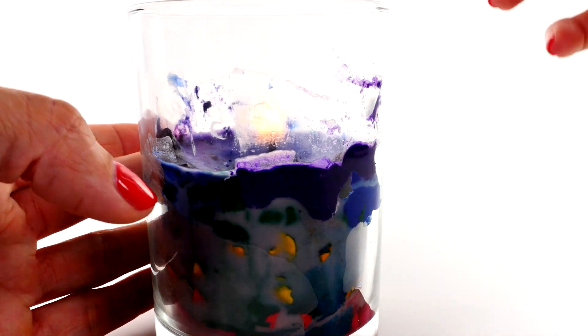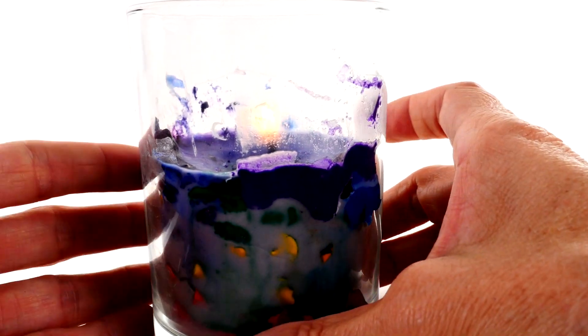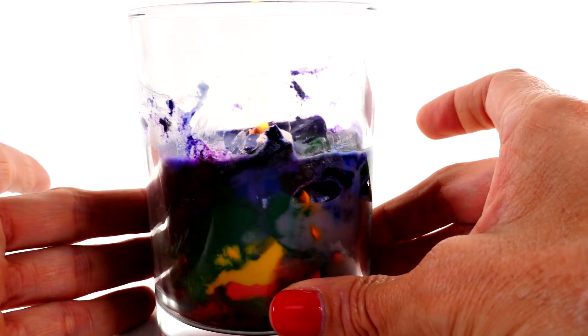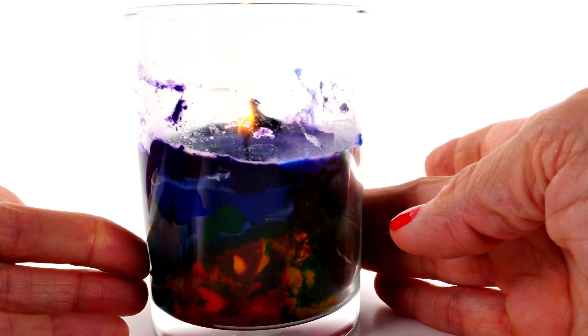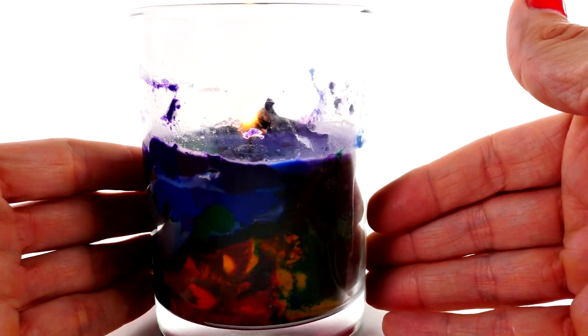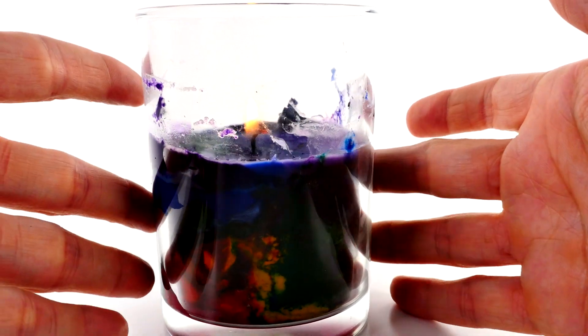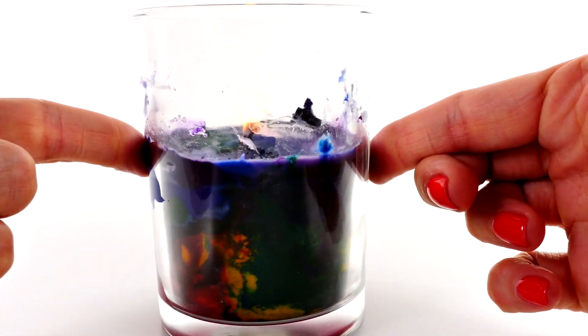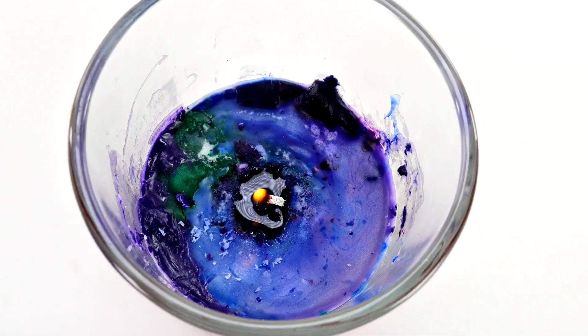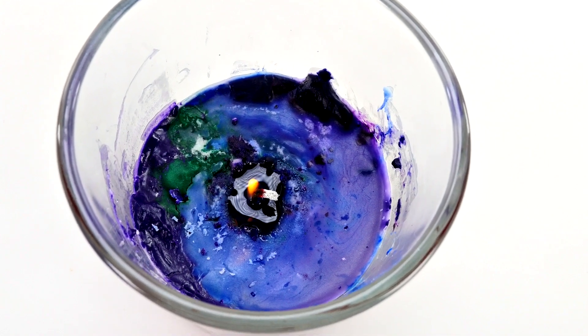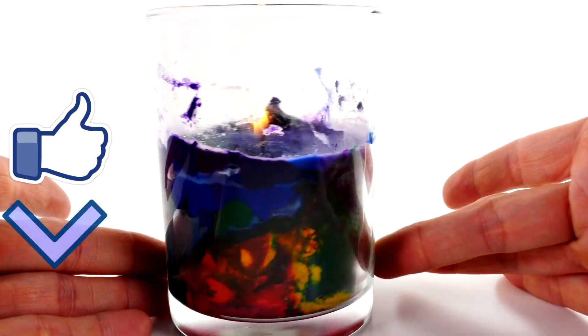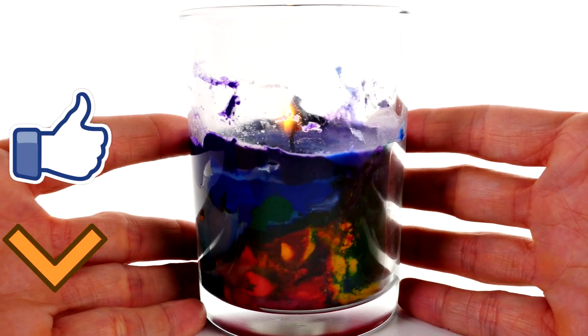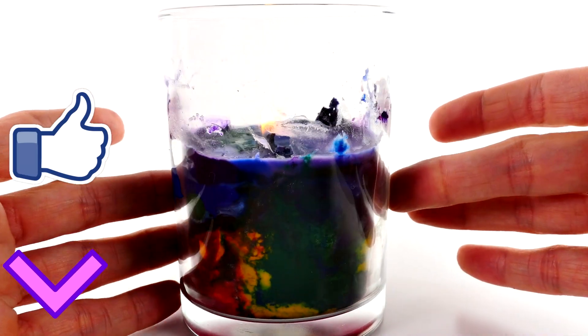And then the other thing that I would have done differently is I wouldn't have moved it at all. I would have let it sit outside until the sun went down and let the wax solidify out there. Because when I moved it, it was so liquidy that all of the colors pooled together and kind of messed it up. But I think this part still looks really cool. So I hope you guys enjoyed the video, and if you give it a try, let me know how it turned out.